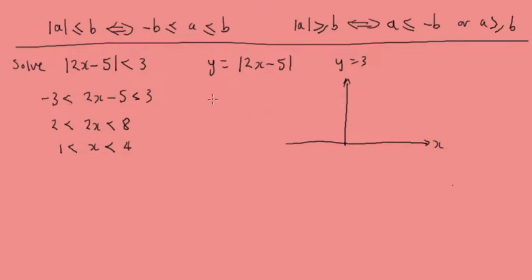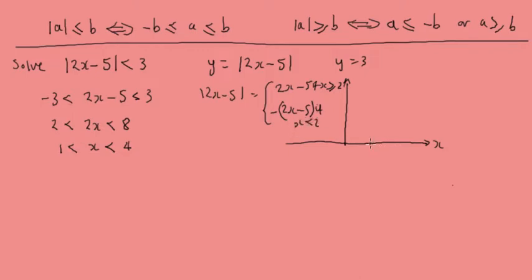The modulus of 2x minus 5 equals 2x minus 5 if x is greater than or equal to 2 and a half, or minus (2x minus 5) if x is less than 2 and a half. We have y equals 3, and the graphs intersect at x equals 1.